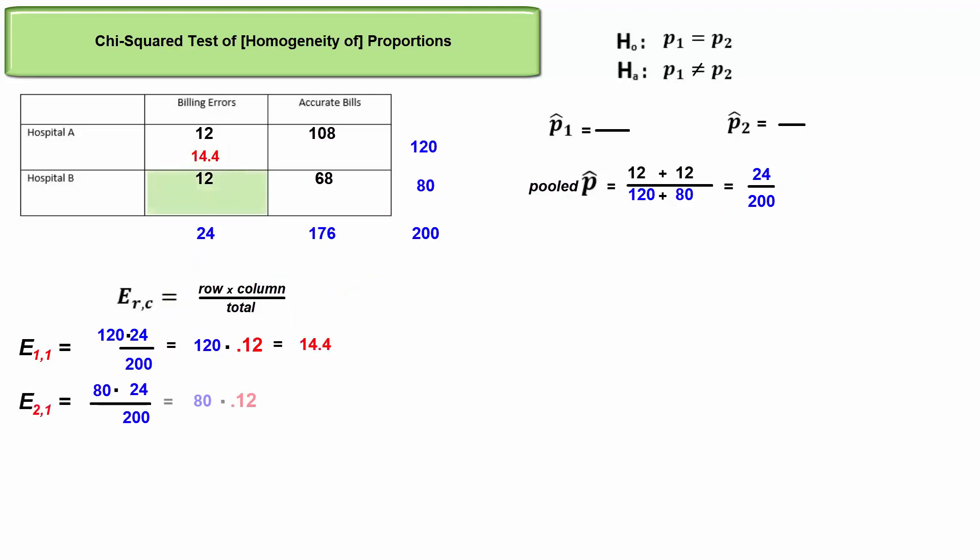Look at hospital B's expected errors. Its sample of 80, the row total, is also multiplied by pooled p hat, the column total divided by the grand total.